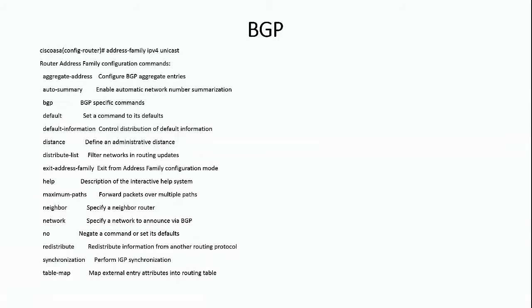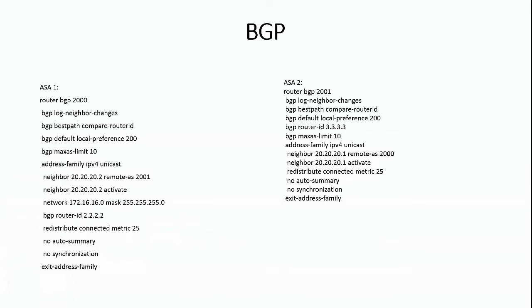There is a keyword 'neighbor' and a parameter 'network'. These are the important parameters helpful in defining BGP neighborship between two routers or two ASAs. Looking at the configuration required on an ASA, the first section talks about ASA1 and the second talks about ASA2.